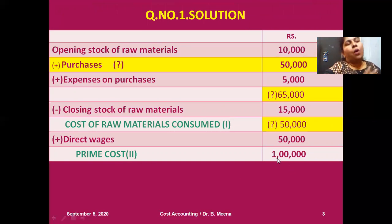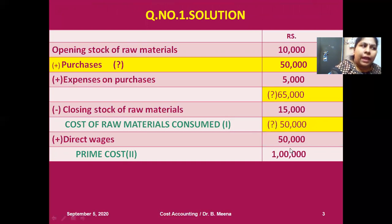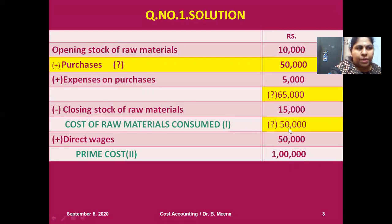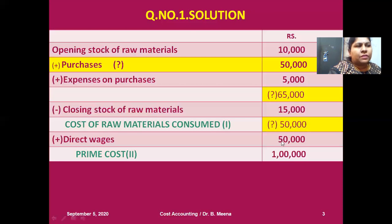Prime cost information is also given in the problem — that is 1 lakh. Now look very carefully at how I proceed with this problem to get the answer for purchase. If the prime cost is 1 lakh and the direct wages is 50,000, what could the cost of raw materials consumed be? If cost of raw materials consumed is 50,000, then I add direct wages 50,000, and then I will get the answer 1 lakh. So if there is 50,000, then only will I get 1 lakh after adding the direct wages. So the cost of raw materials consumed must be 50,000.